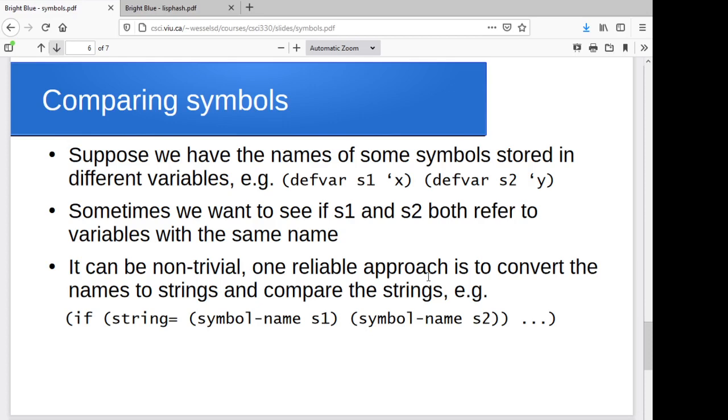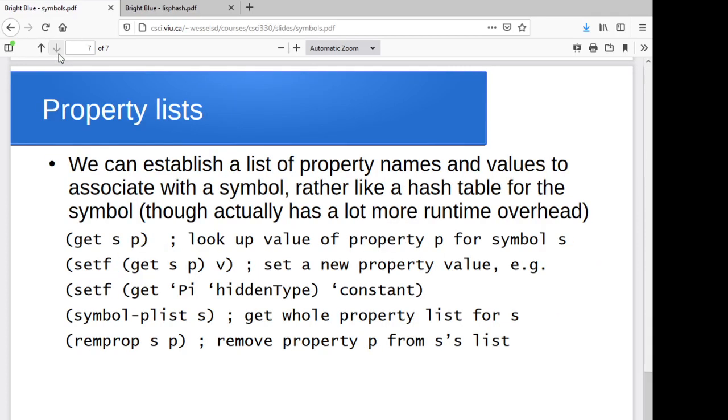You can go through and compare symbols. If I've stored the symbol x in one variable and the symbol y in another variable, it can be a little dicey to compare the two of them. There is the possibility to convert a symbol to a string. This is basically saying, look up whatever symbol is stored in s1 and convert its name to a string. Then we'll just use string equals to compare these things. If you ever run into issues comparing variables that are storing symbols, this is one workaround.